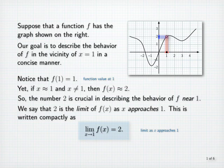If f of 1 were equal to the limit, the hole would be filled. In fact, at any point where the graph of f is continuous, the y-coordinate — that is, the value of f — will equal the limit of f as x approaches the x-coordinate of that point. So value and limit coincide wherever the graph of f is continuous. This idea is the basis of the mathematical definition of continuity that you will see later.